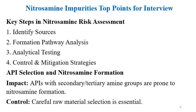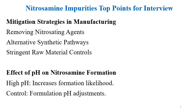Regarding API selection and nitrosamine formation: APIs with secondary or tertiary amine groups are prone to nitrosamine formation. If an interviewer asks which type of APIs are prone to nitrosamine formation, you should answer: APIs with secondary and tertiary amine groups. For control, careful raw material selection is essential.